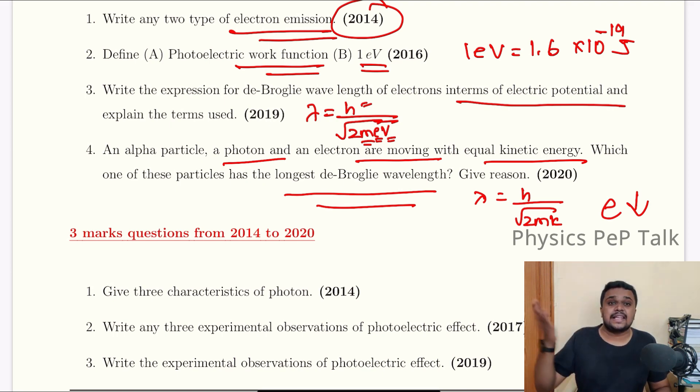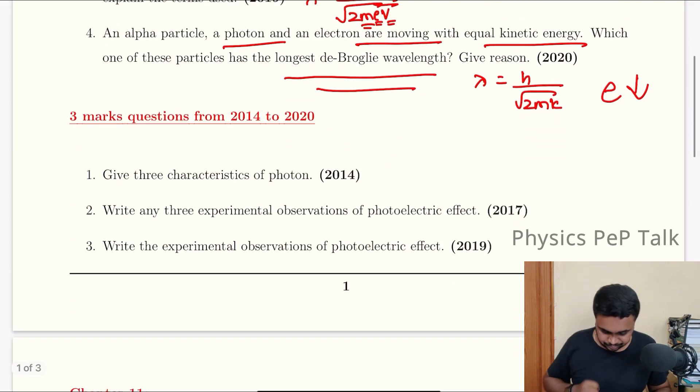This is the value of H by root of 2Mk. Electron has the least mass because of which it has the highest wavelength. Total 2 marks you will be getting.